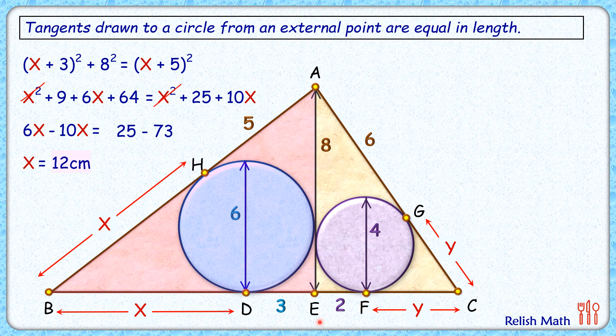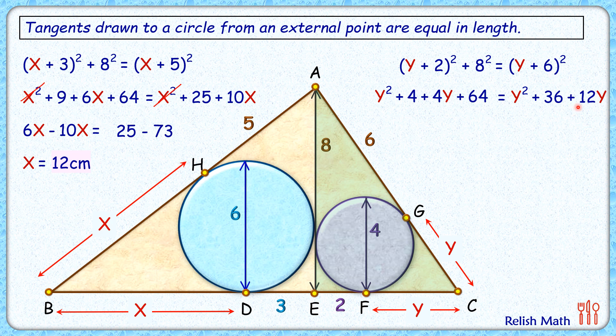Same way, solving for value of y, we consider triangle AEC. Applying Pythagoras theorem, we get (y + 2)² + 8² = (y + 6)². Applying the (A + B)² formula, we get y² + 4 + 4y + 64 = y² + 36 + 12y.